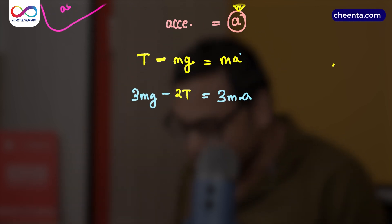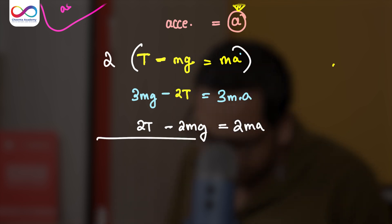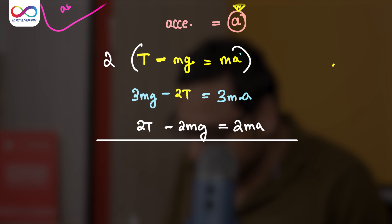So we are almost done. We have two equations. We can easily solve it. So let's multiply the first equation by 2. I get 2T minus 2Mg equals 2MA. If you add it, 2T cancels off. So you have Mg equals 5MA actually.